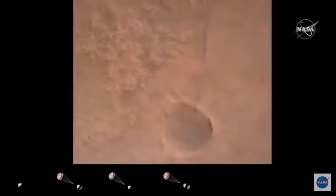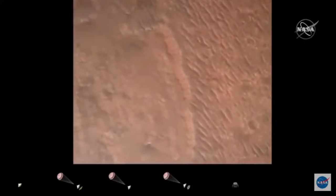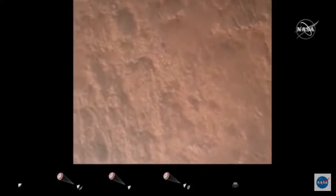Backshell sep. Current velocity is 83 meters per second at about 2.6 kilometers from the surface of Mars. We have confirmation that the backshell has separated. We are currently performing the divert maneuver. Current velocity is about 75 meters per second at an altitude of about one kilometer off the surface of Mars.